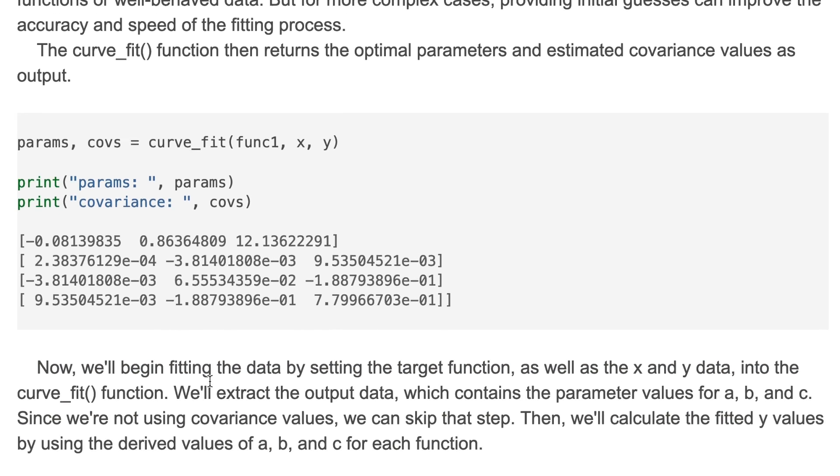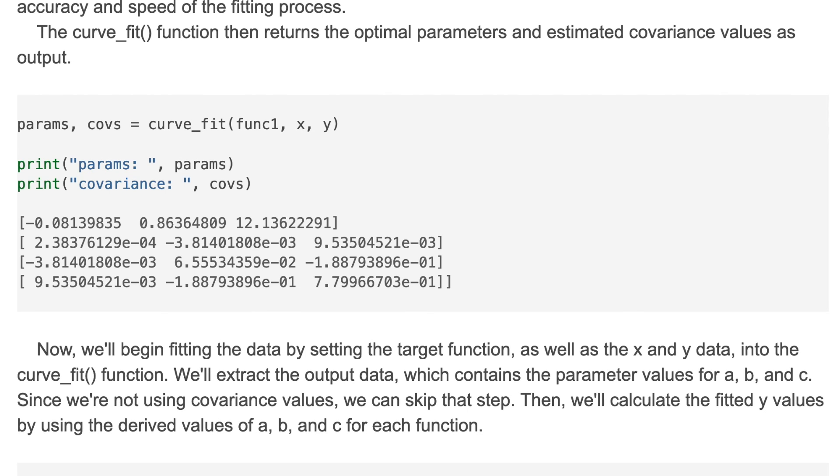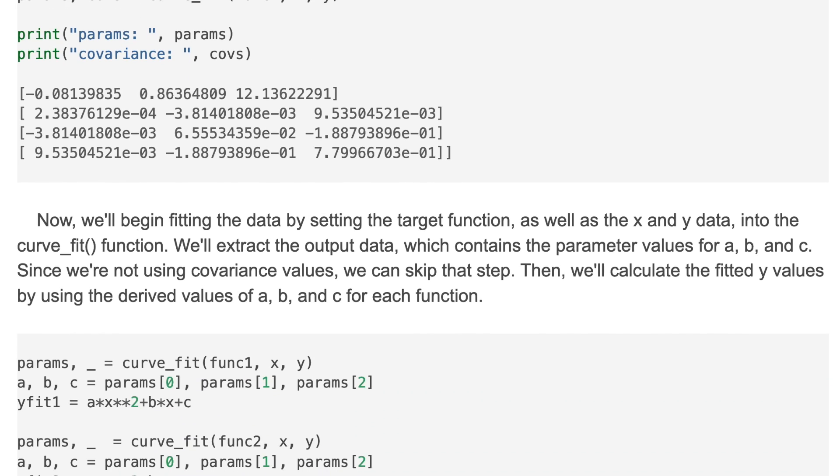Now we'll begin fitting the data by setting the target function as well as x and y data into the curve_fit function. We'll extract the output data which contains the parameter values for a, b, and c. Since we are not using covariance values, we can skip that step. Then we'll calculate the fitted y values by using the derived values of a, b, and c for each function.